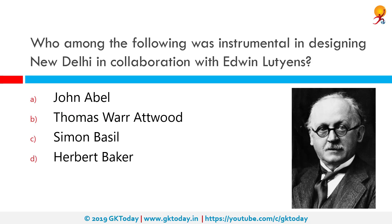Who among the following was instrumental in designing New Delhi in collaboration with Edwin Lutyens? The correct answer is Herbert Baker. Sir Edwin Lutyens was an English architect noted for his versatility and range of invention. He is known especially for his planning of New Delhi and his design for the Viceroy's House.